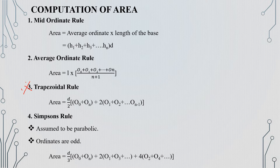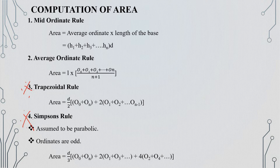The next important methods are the Trapezoidal rule and Simpson's rule. For the Trapezoidal rule, area equals d divided by 2 multiplied by the first ordinate plus the last ordinate plus 2 times the sum of all intermediate ordinates.